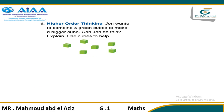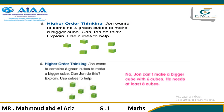Jan wants to find six green cubes to make a bigger cube. Is that enough? No, it's not enough. You need at least eight cubes to make a bigger cube. So we will write: No, Jan can't make a bigger cube with six cubes. He needs at least eight cubes.